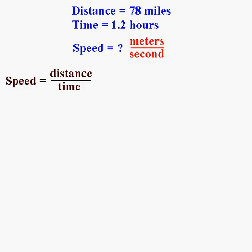So we want to calculate the same speed, just in different units. We use the same equation: speed equals distance over time. But now we have a problem. We need our speed in meters per second, but the data we have are miles and hours. So in order to get the speed in meters per second, I'm going to have to convert from miles to meters, and from hours to seconds.